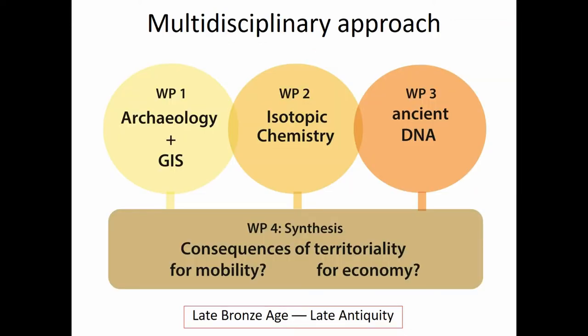This is the structure of the project. We are creating a zooarchaeological and archaeological database which we can use with the system. Then there is a package devoted to isotopic chemistry — strontium and oxygen. Then ancient DNA. And at the end we will combine the three lines together to see what we can say about the consequences of territoriality for mobility and for economy in this time period.